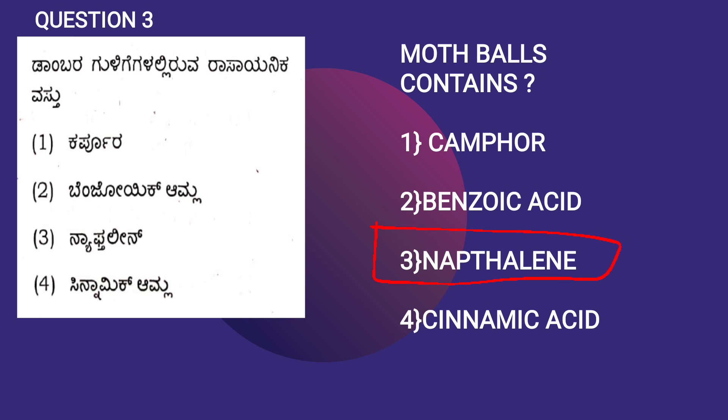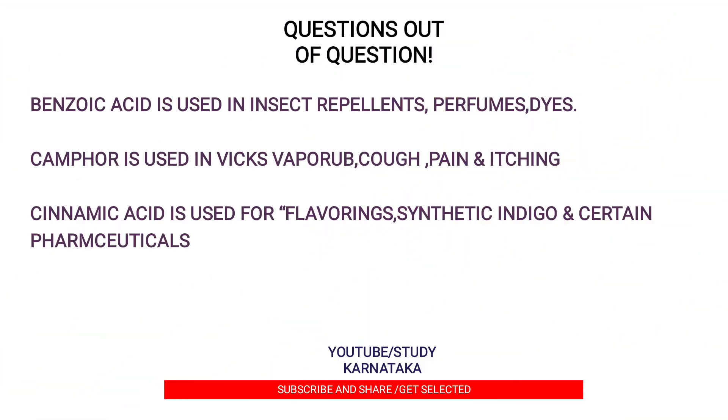If you have gone to any of the malls or any of the grocery stores, you can see that the camphor balls are kept for sale. These are nothing but naphthalene balls, right? These are called moth balls. We can see what are the uses of camphor, benzoic acid, and cinnamic acid. We can call this as question out of question because this question has been asked in the form of options. Now we can derive the questions from those.